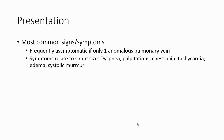More common signs and symptoms: frequently asymptomatic. If symptomatic, symptoms related to shunt include dyspnea, palpitation, chest pain, tachycardia, and edema. Systolic murmur may be normal.